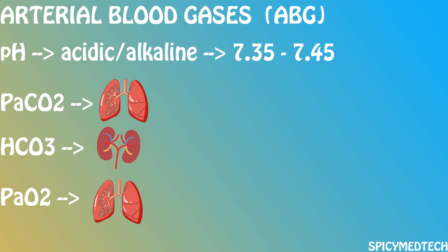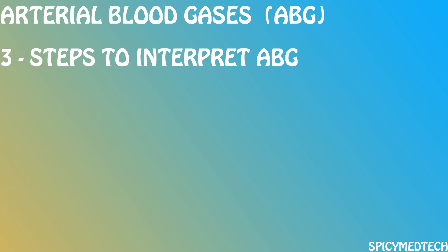Anything with a pH less than 7.35 would be considered acidic, and anything with a pH above 7.45 would be considered alkaline. PaCO2 and PaO2 are both regulated by the lungs, so let's call that the respiratory factor. Bicarbonate, or HCO3, is regulated by our kidneys, and we shall call that the metabolic factor. These two organ systems work hand-in-hand to maintain the pH of the body at 7.35 to 7.45. Now let's get into the three steps of ABG interpretation.